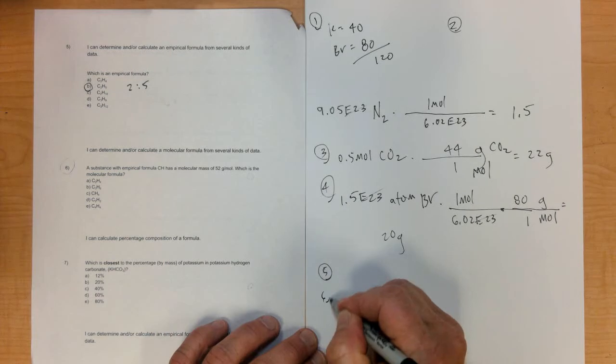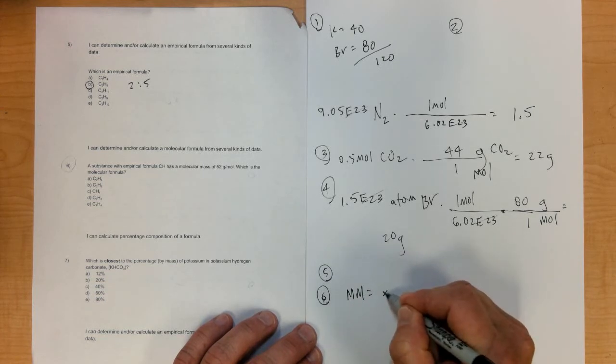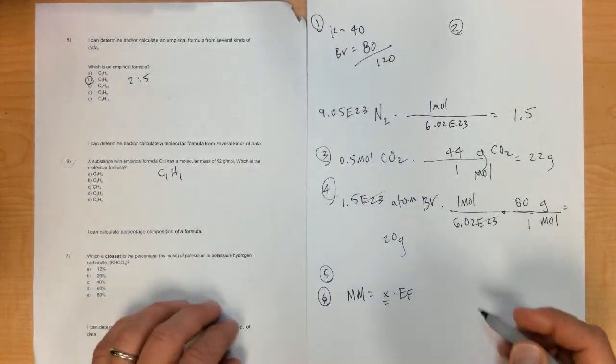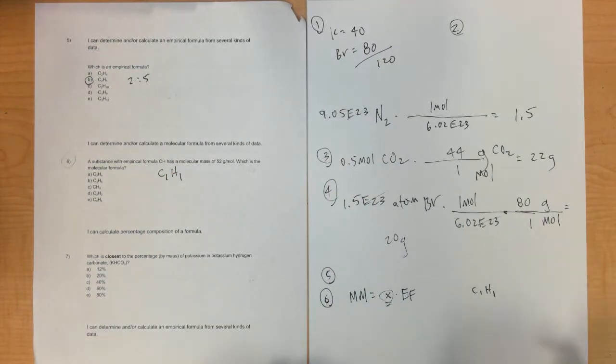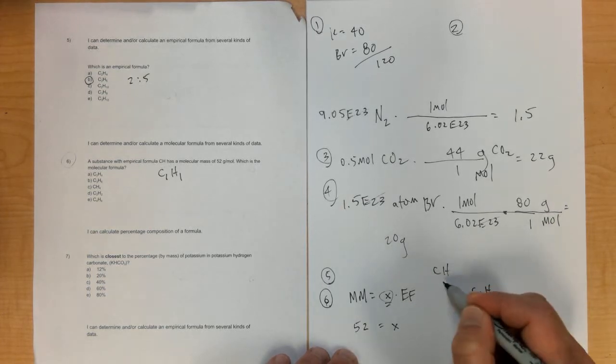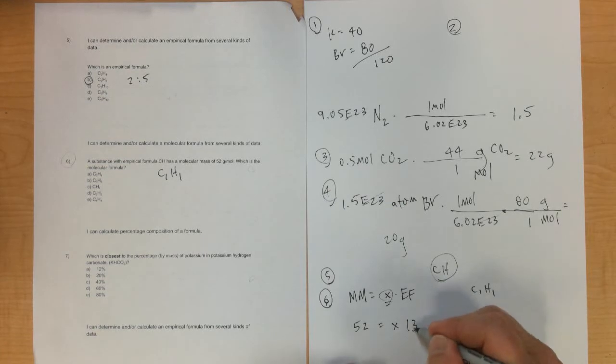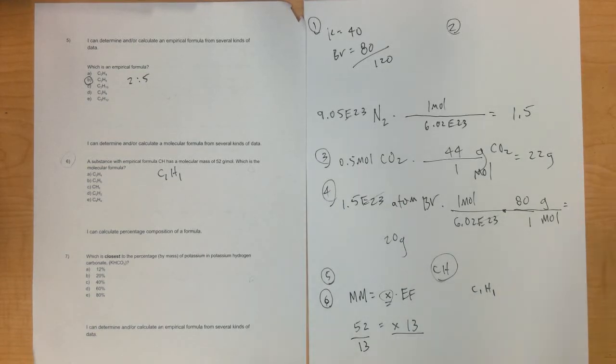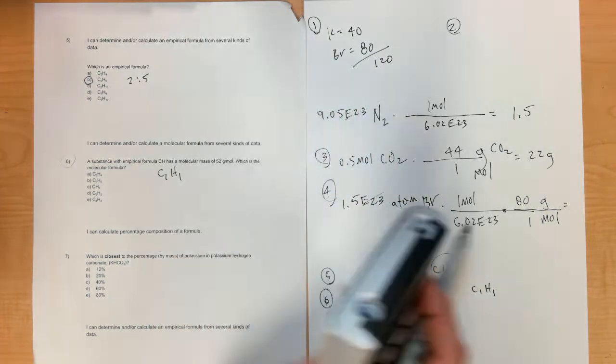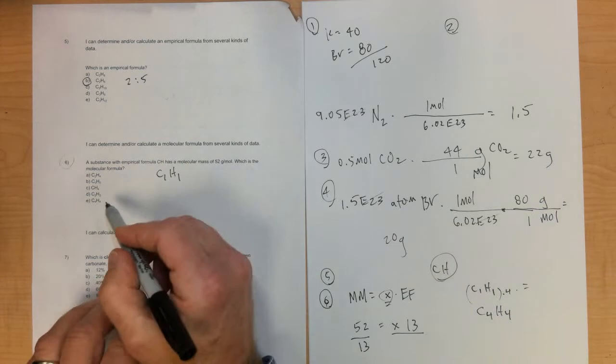Number six: a substance with an empirical formula of CH has a molar mass of 52. Molar mass equals some number times the empirical formula mass. The empirical formula is CH, which adds up to 13. So 13 times X equals 52. 52 divided by 13 gives us 4, so we multiply C1H1 by 4 to get C4H4, which is letter E.